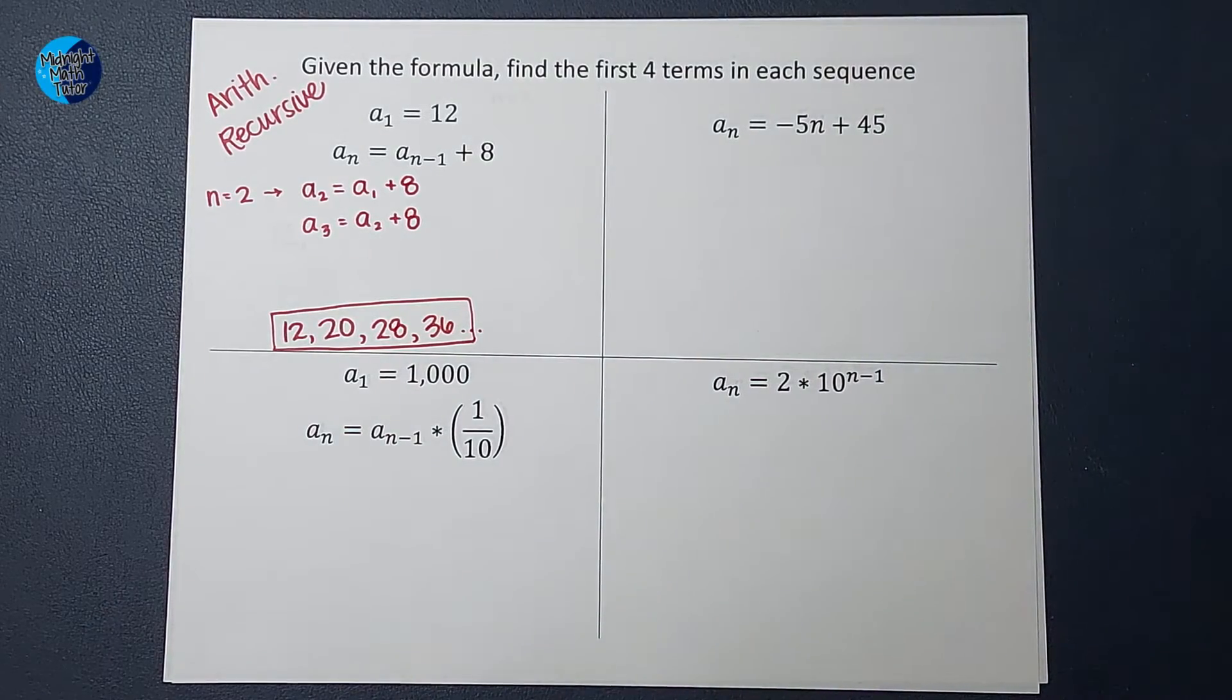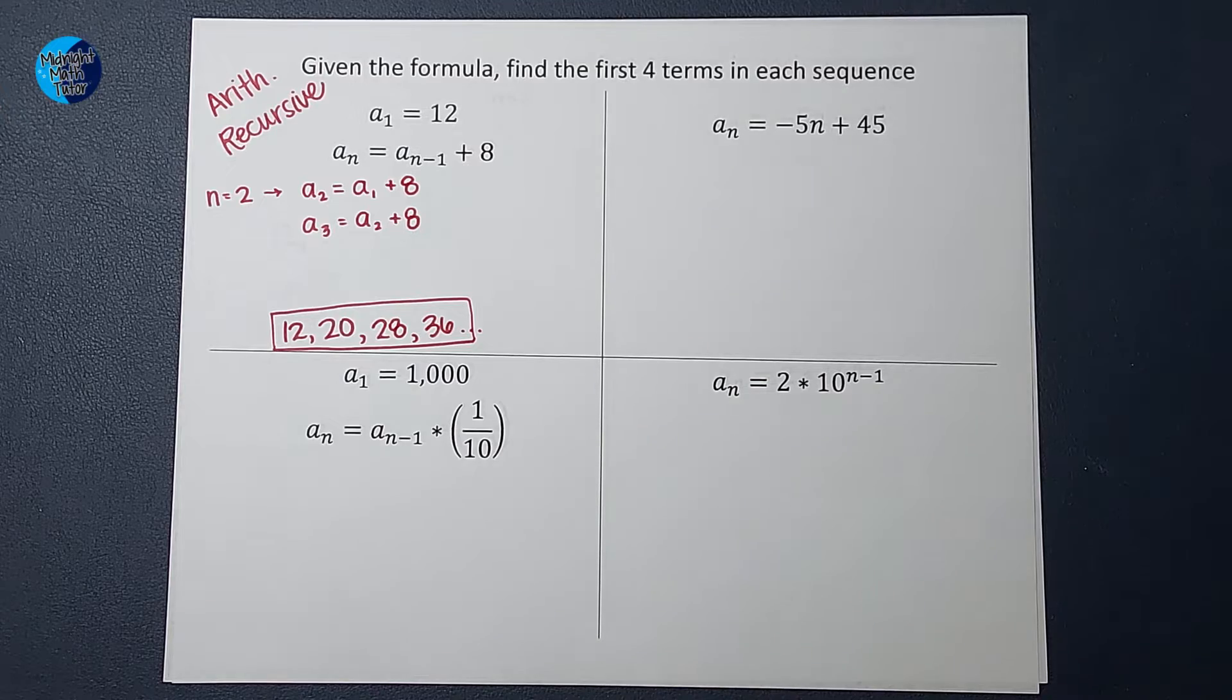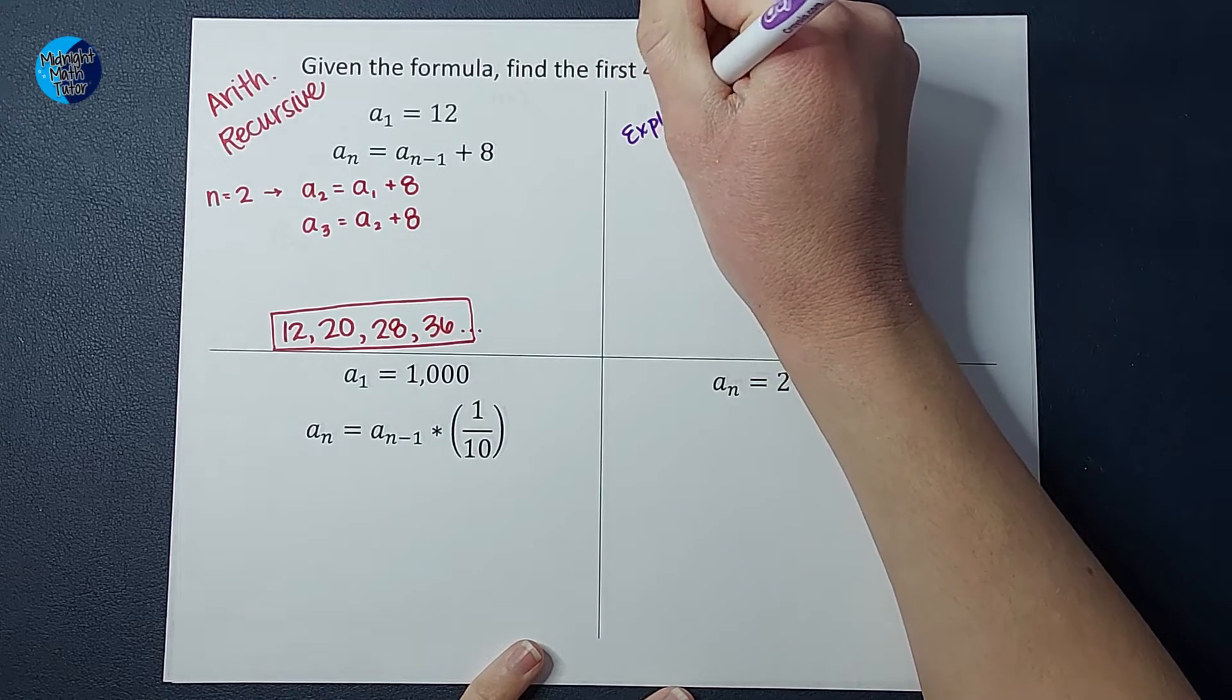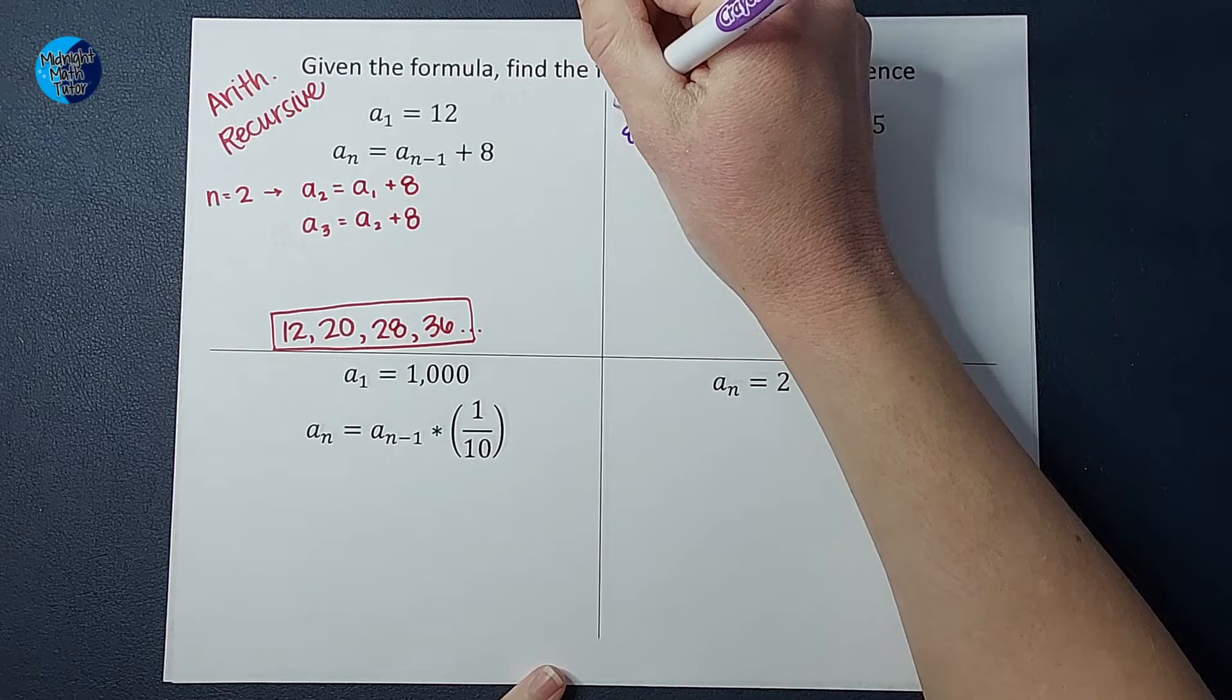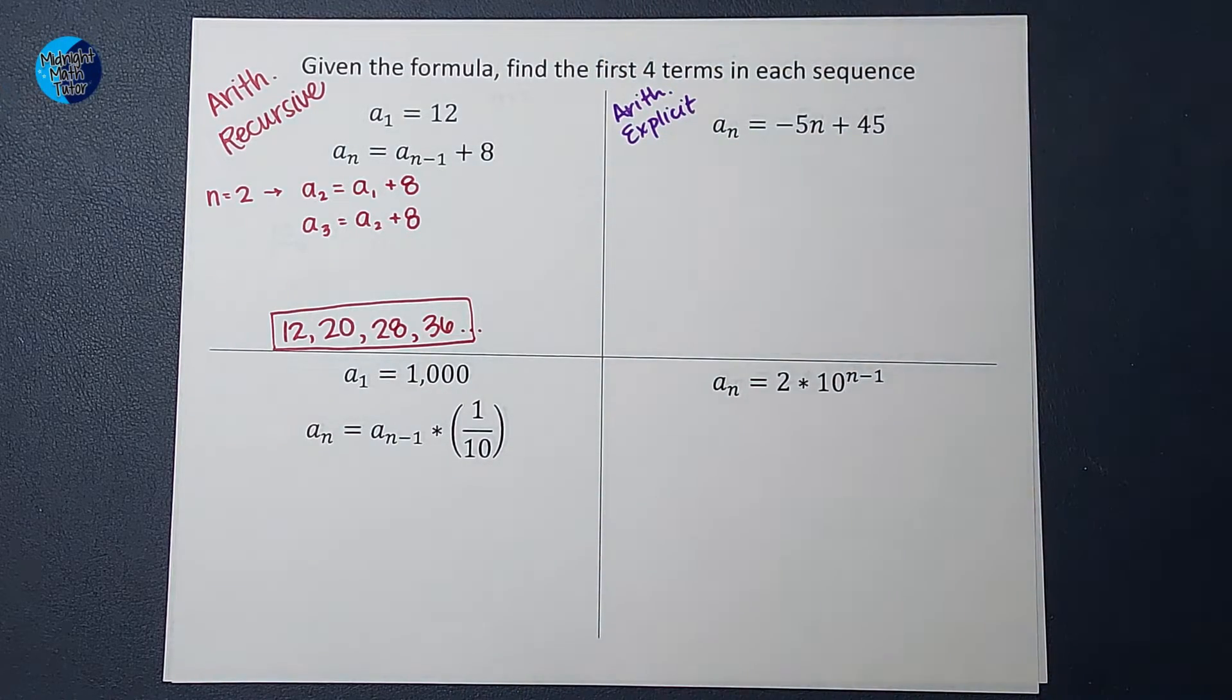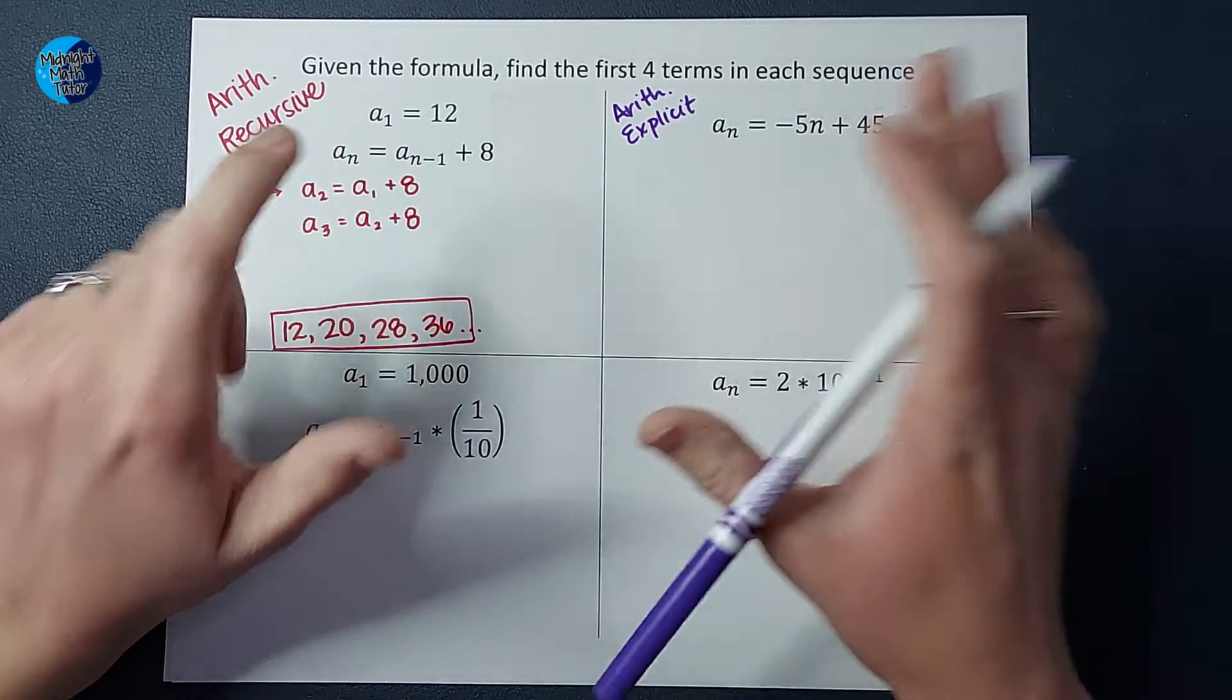Okay, that wasn't too bad. Let's check out this one. This one is an explicit formula. I don't know why it's called that, but there you go. And it is arithmetic. But let's go ahead and find the first 4 terms of this sequence. So this one doesn't just straight up tell me the first one, but that's okay.